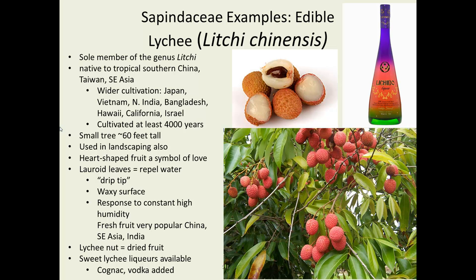The heart-shaped fruits are considered a symbol of love in China, and it has been very popular there for many millennia. These leaves are typical of laurel forest lauroid adaptations, where the leaves hang down and have a tip to encourage water that runs off to drip off, with a very waxy surface to further accelerate shedding any water that falls on them. It is dried sometimes, in which case it's called a lychee nut.